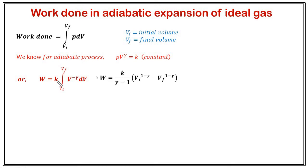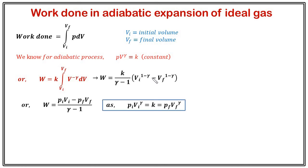Integrating gives k/(γ - 1) times [Vi^(1−γ) − Vf^(1−γ)]. Since pV^γ = constant, we can write k as pᵢVᵢ^γ or as pf·Vf^γ. Substituting these values of k, the work done simplifies to (pᵢVᵢ − pf·Vf)/(γ − 1).